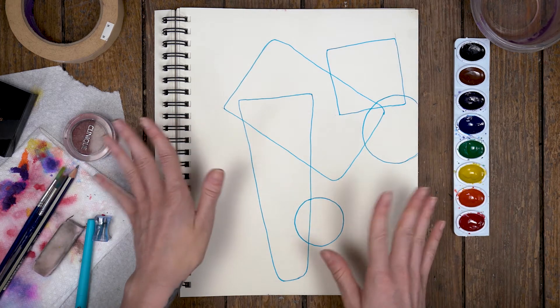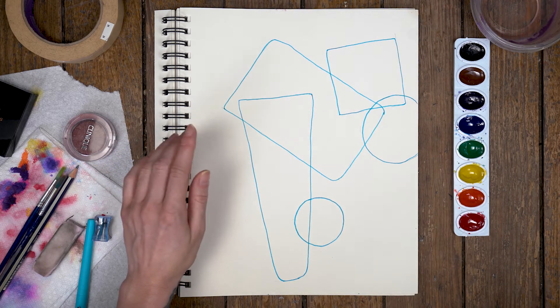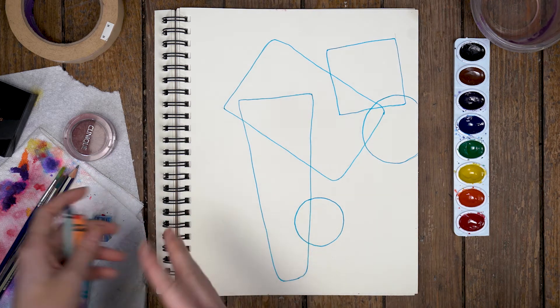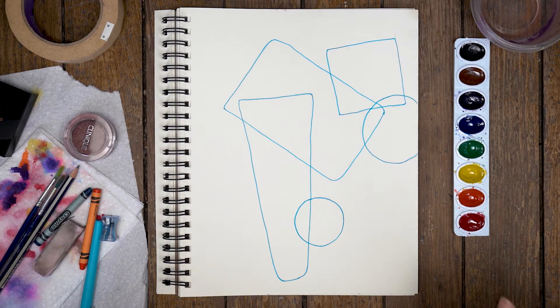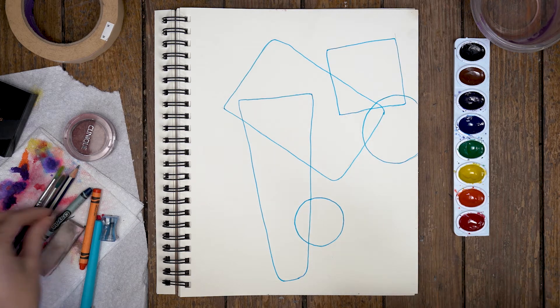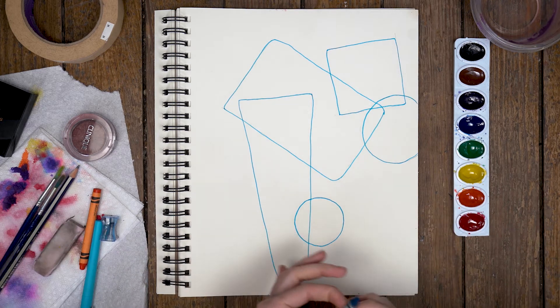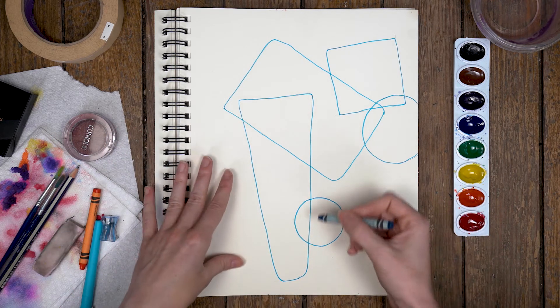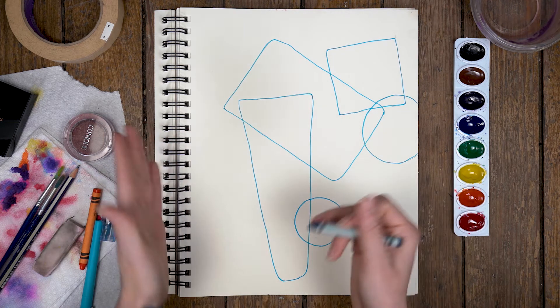So now for this part, this is the fun part. You can use crayons or watercolors, which is what I'm going to be using. Of course, parental permission—always ask before you get out the paints. But if you don't have watercolors and just have crayons, markers, or colored pencils, that works too. You can also combine them together.